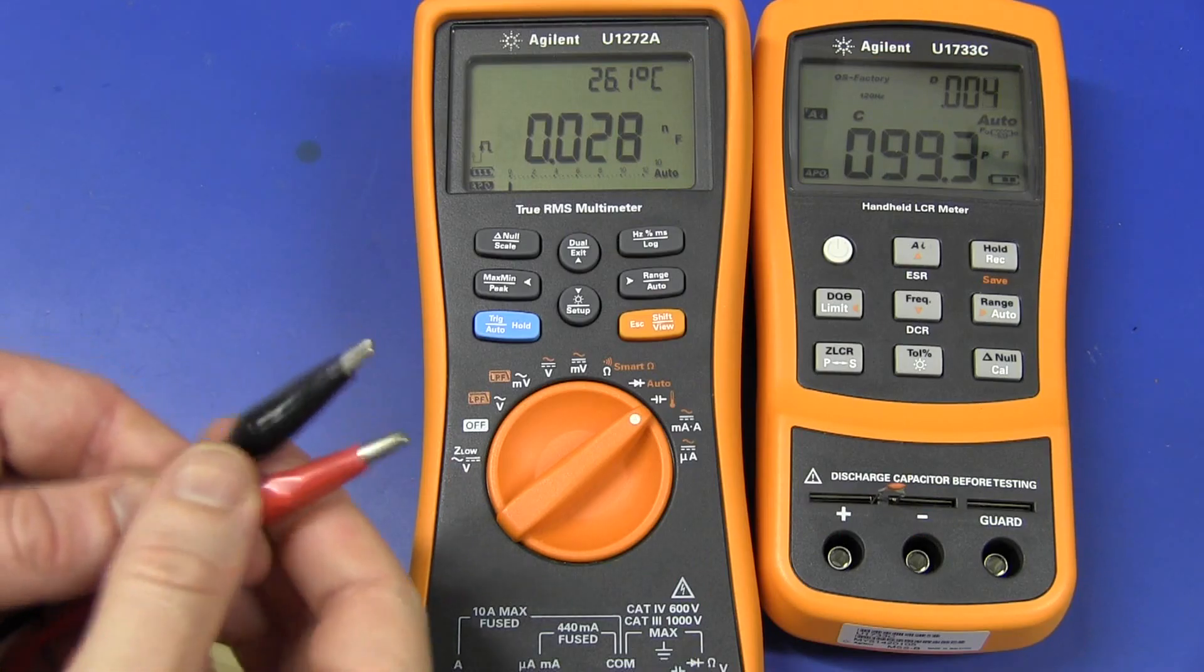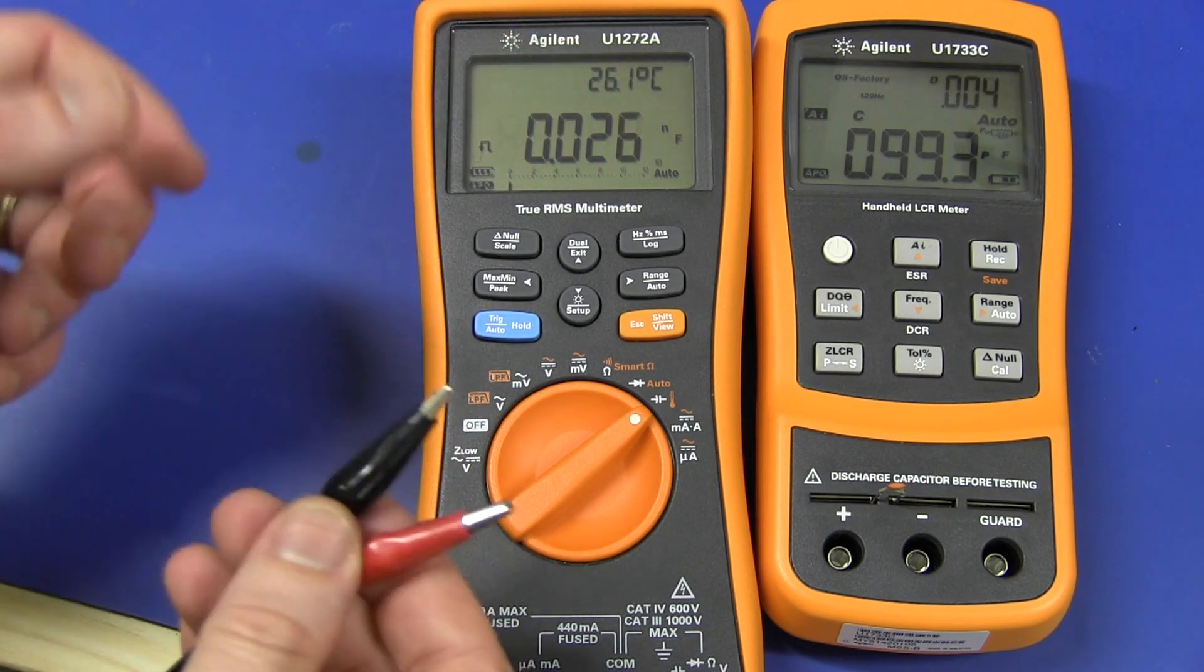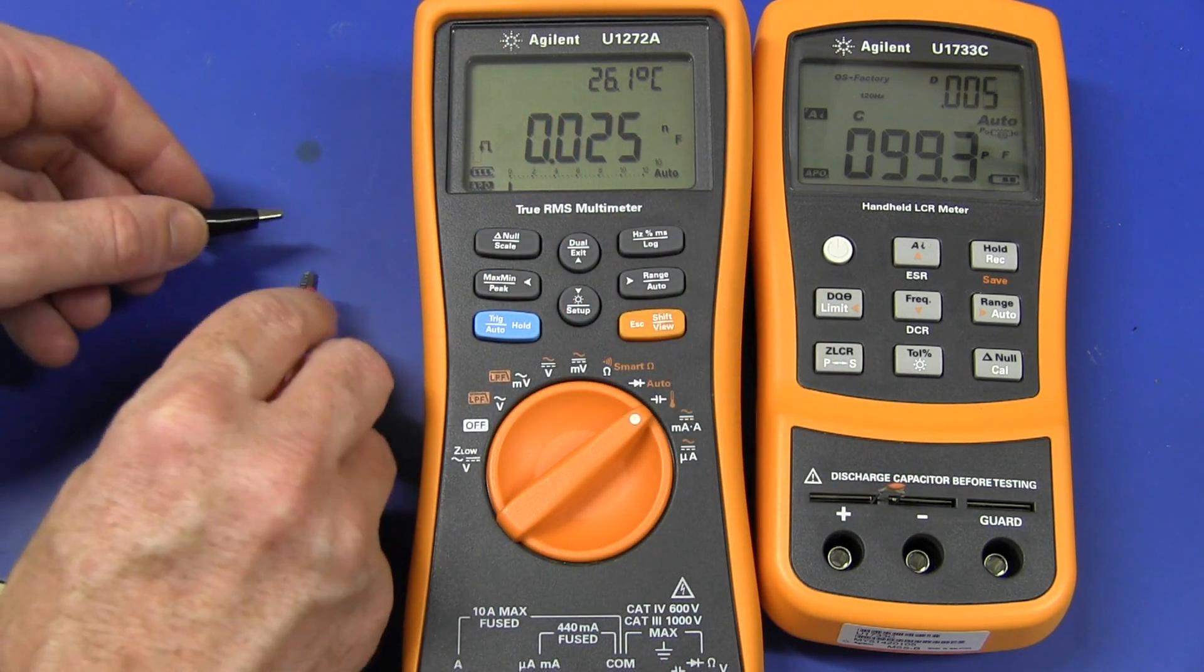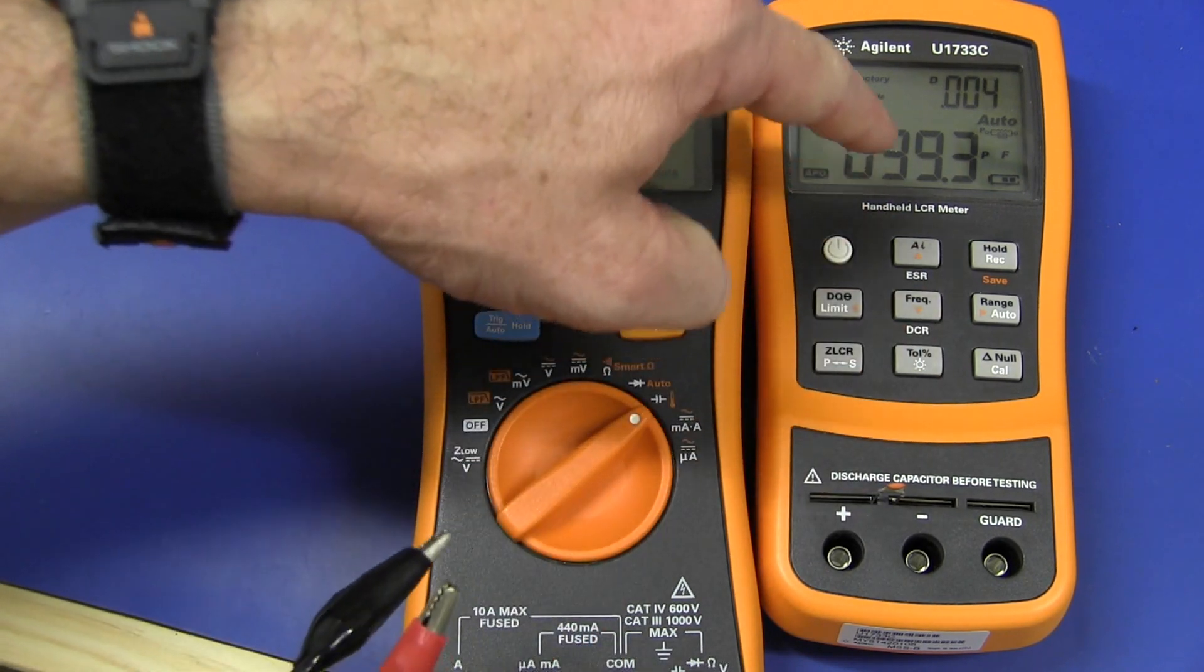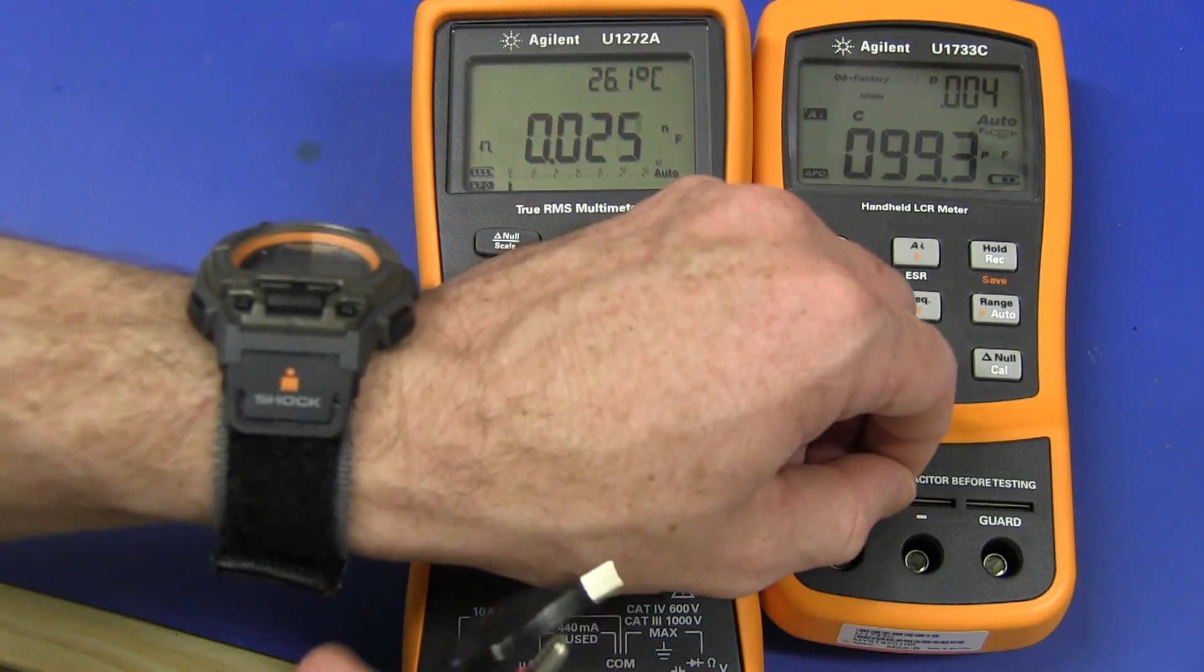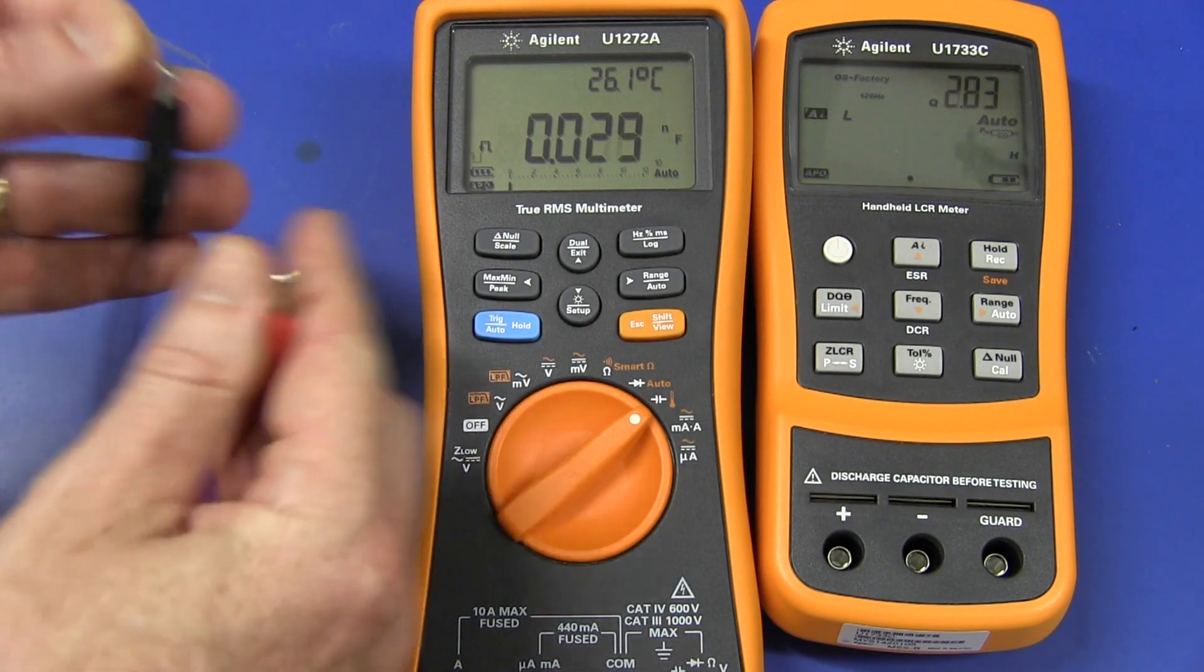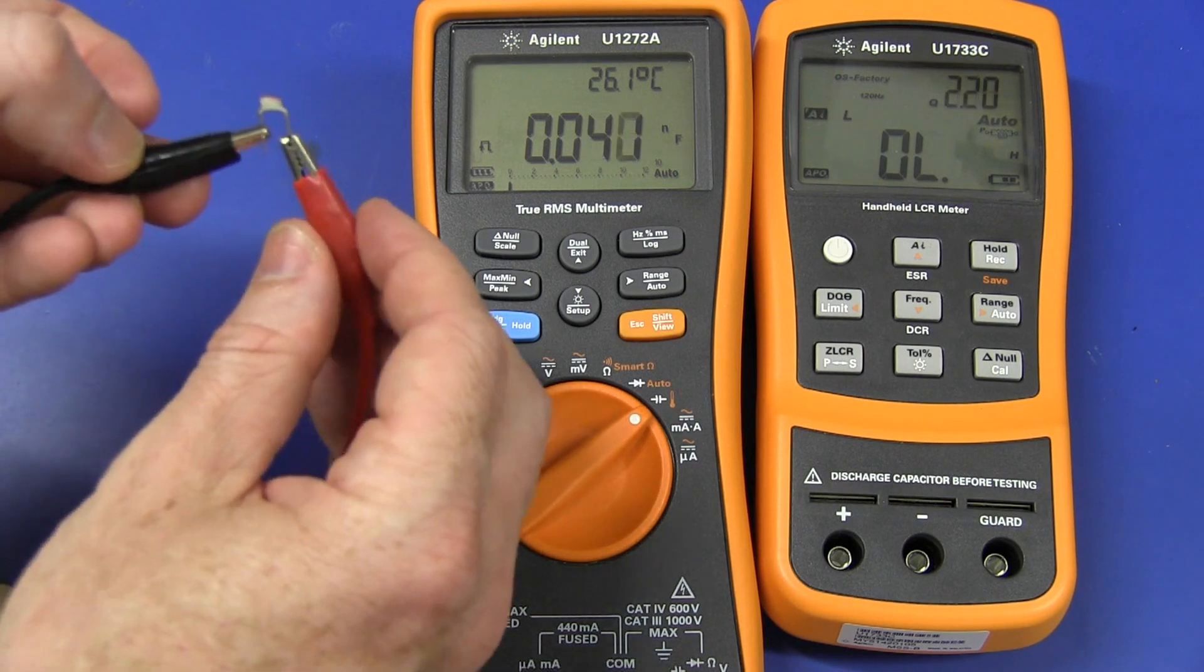And as for my previous video where I reviewed the Agilent U1272A meter, a lot of people were saying that the capacitance measurement was affected because I was probing the surface directly. And it makes no difference. There's my capacitor, 99.3 pF. I'll measure it in free air like this. And there we go. It's no good.